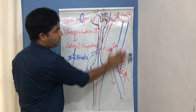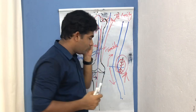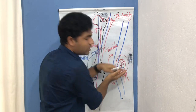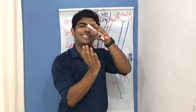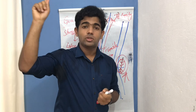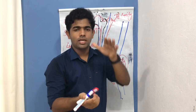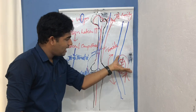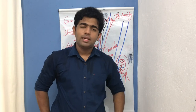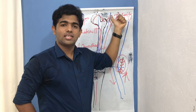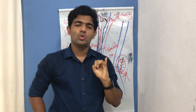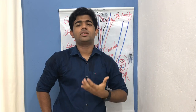Additionally, genu valgum can lead to joint laxity. As the lateral compartment narrows, the ligaments in that region also get compressed and become relaxed or loose, leading to ligament laxity. When there is ligament laxity, it results in joint instability. Therefore, lateral compartment joint instability can also occur in cases of genu valgum.